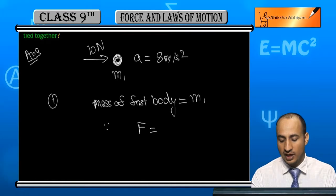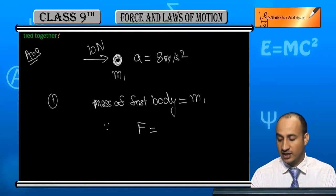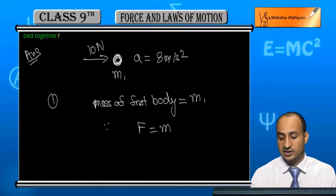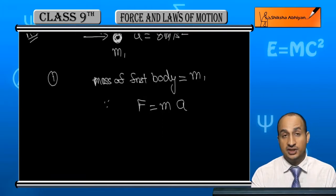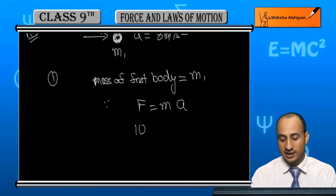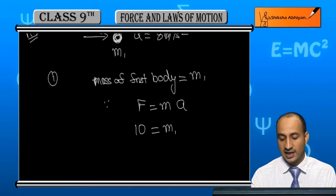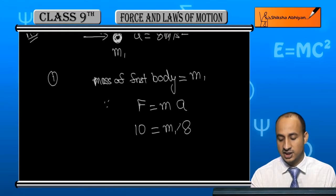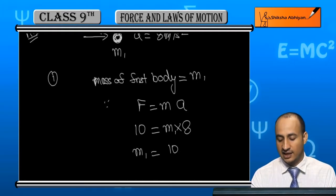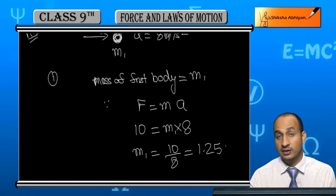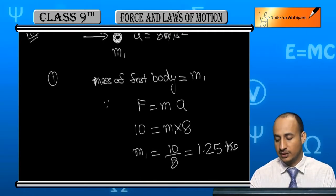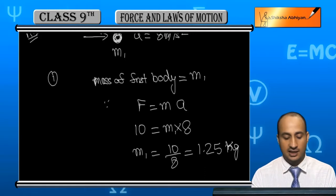According to the force equation, F is equal to m1 times a. Here force is 10 newton, mass is m1, and acceleration is 8 m/s². So m1 will be 10 divided by 8, which equals 1.25 kilogram.